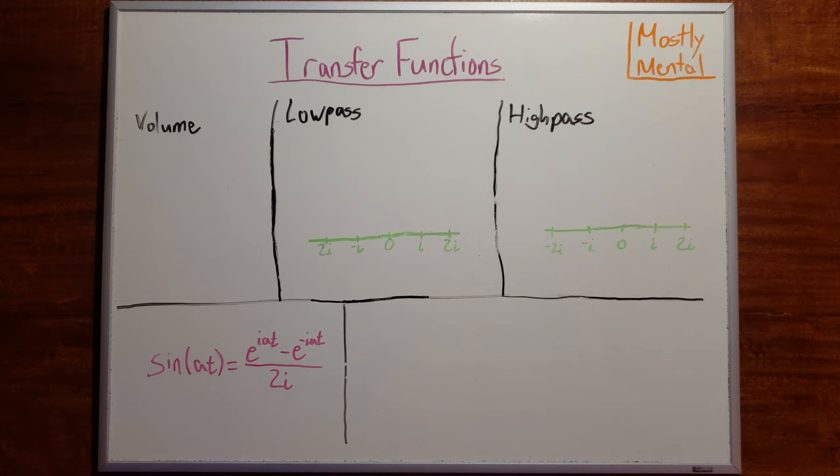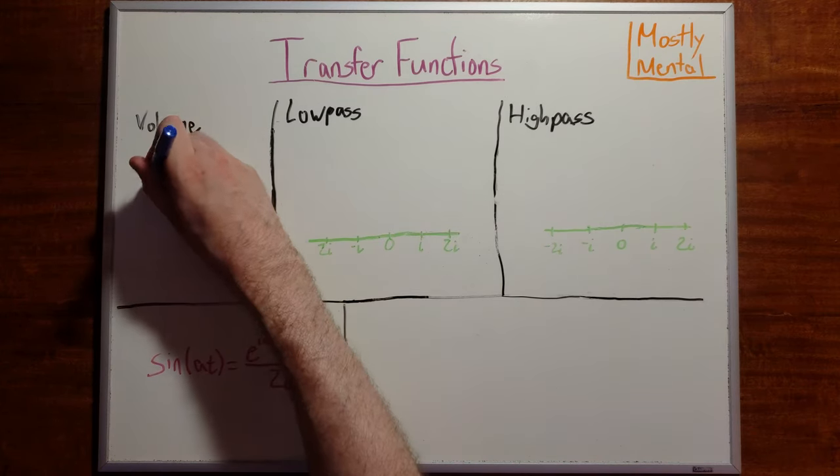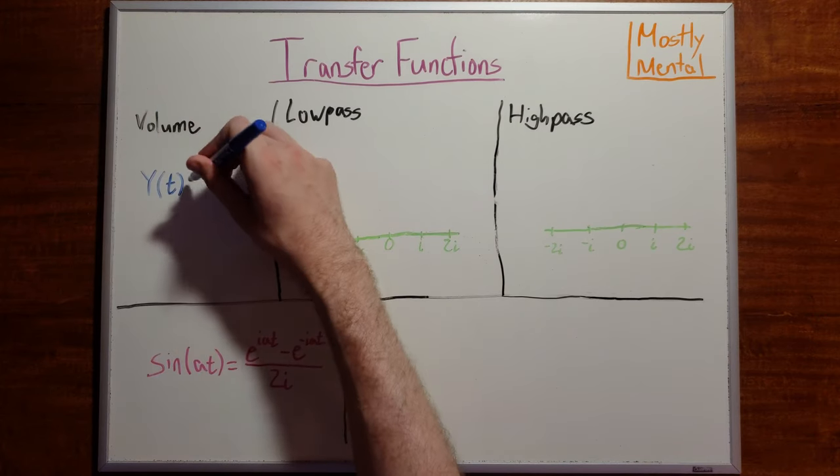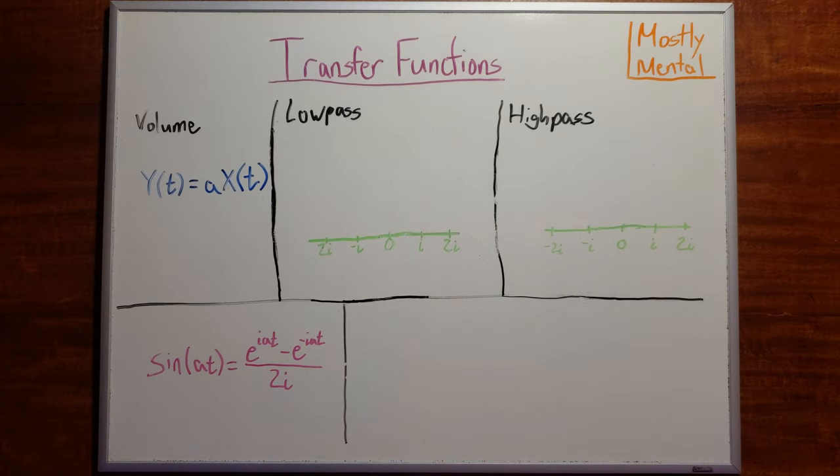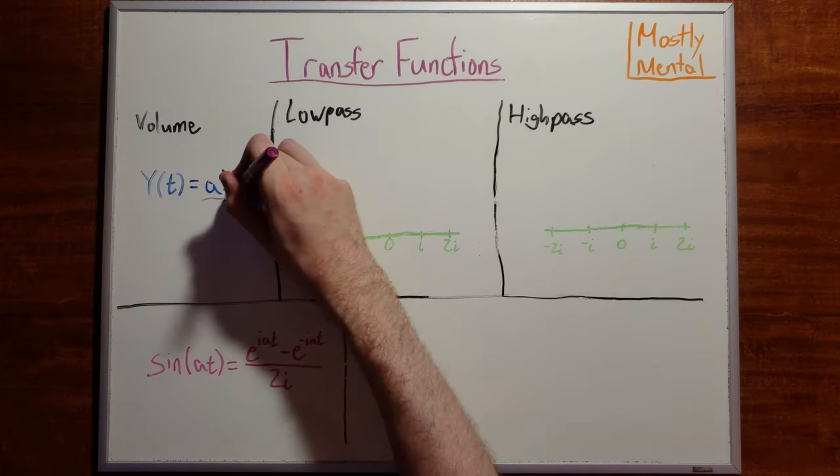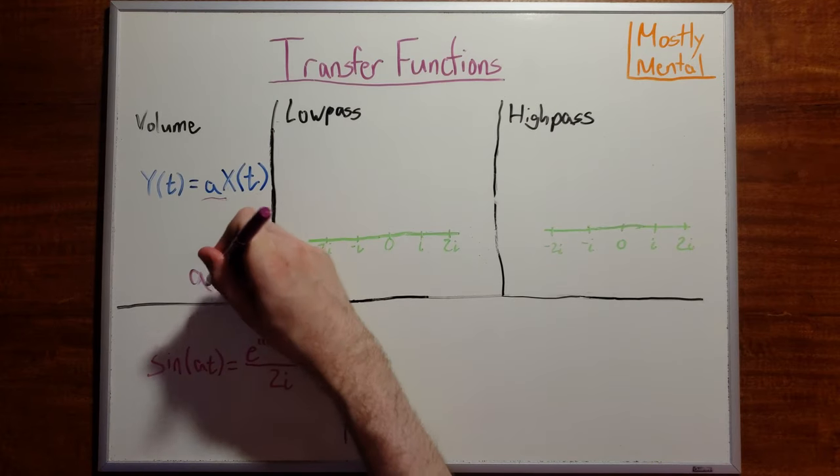What does that look like mathematically? To adjust the volume, we just multiply our input signal by a constant. And it's not too hard to show that the associated transfer function is just that same constant, scaling all frequencies equally.